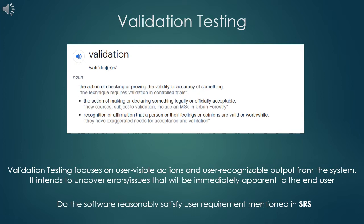The client is involved for sure, but he can be involved directly or indirectly to validate the software. Validation testing strategies can be divided into two types: one in which the customers are directly involved in the testing process, and a second type in which customers are not directly involved. In the second type, we use the SRS document, which hopefully has captured the requirements of the customer in a systematic manner. This SRS is used as a reference document to validate the software. Here we test to check that the software reasonably satisfies the user requirements mentioned in the SRS document.